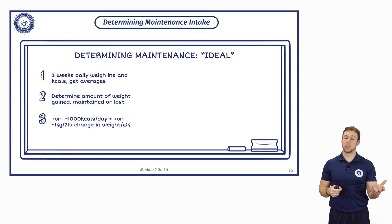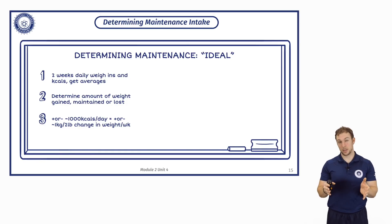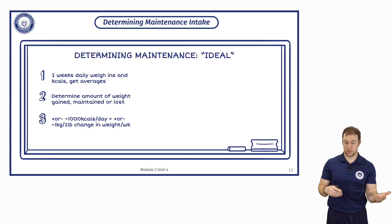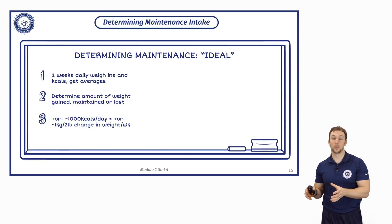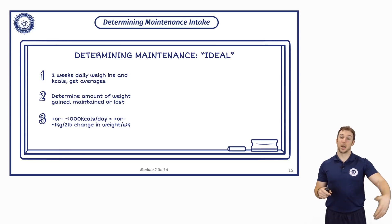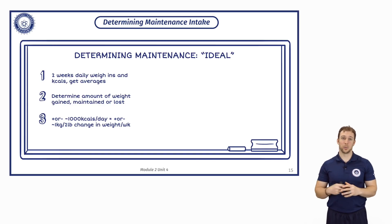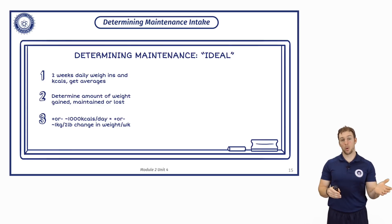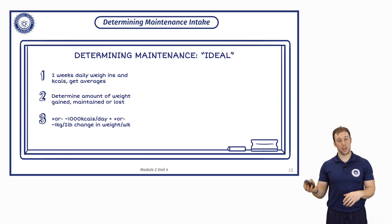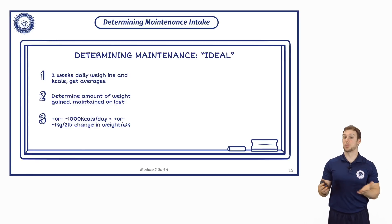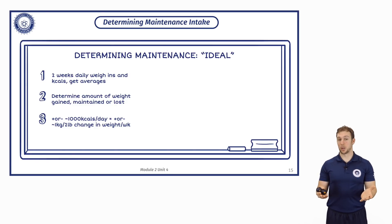A 500 calorie surplus per day will produce roughly one pound of weight gain per week, or about half a kilogram. That means a 1,000 calorie surplus per day will produce about one kilogram of weight gain. Likewise, a 1,000 calorie deficit per day will produce about one kilogram of weight loss. So we can look at the change in body weight from week one to week two and compare it to the average calories in both weeks to get a clear relationship.